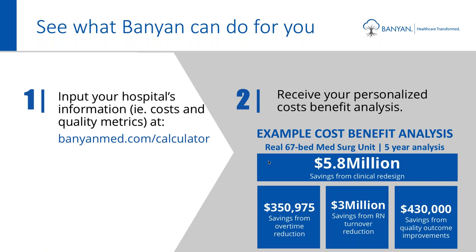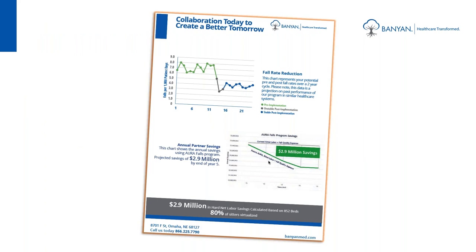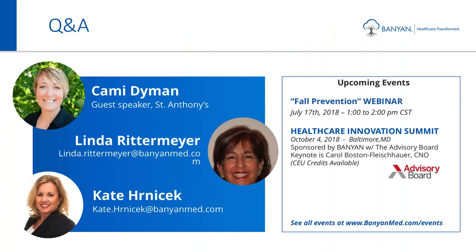We would love to continue this conversation with you. We're going to send you a link after the meeting today asking for information such as your current cost, quality metrics, and scores. If you fill this out and send it back to us, as a complimentary service we calculate the benefits to show what you could realize over five years — no strings attached, your information is kept confidential. We send you back about a six-page document showing exactly what you can save, which you can take to your executive team or nurse leaders to further the conversation.